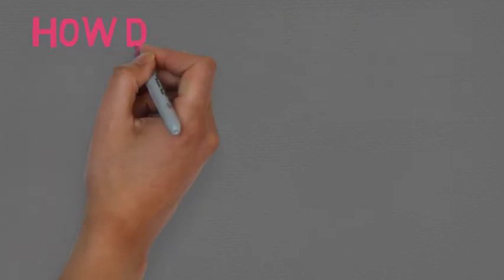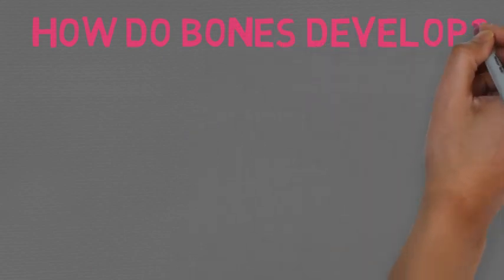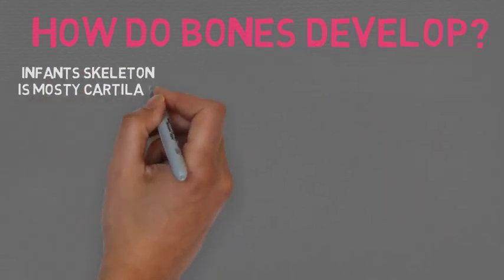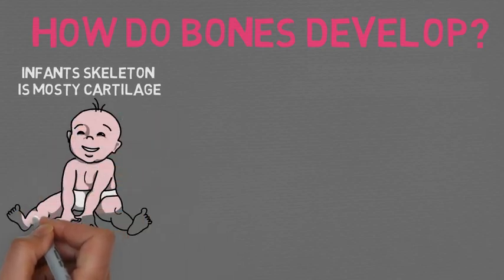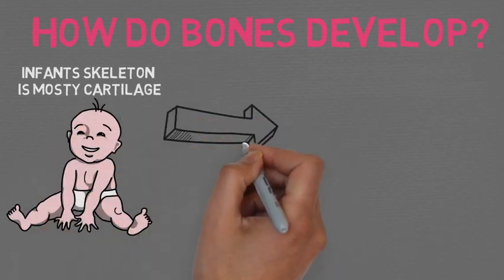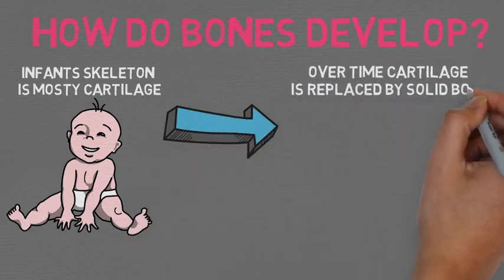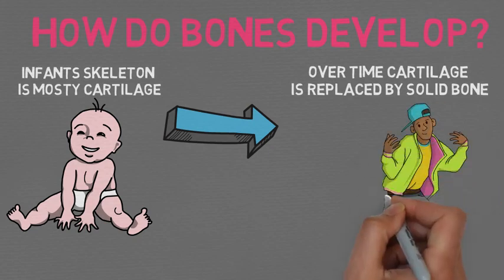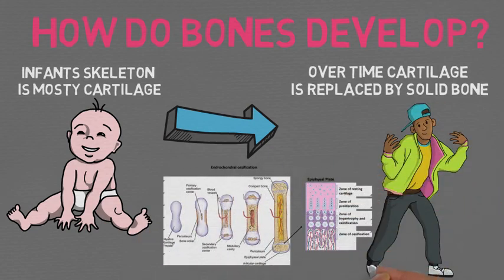Lastly, how do bones develop? As an infant, most of your skeleton is cartilage — a strong, flexible tissue. Over time, the cartilage is replaced by solid bone through a process called ossification, usually complete by the time you stop growing. Some cartilage remains in adults, in your joints protecting the ends of bones, your ears, and the tip of your nose.